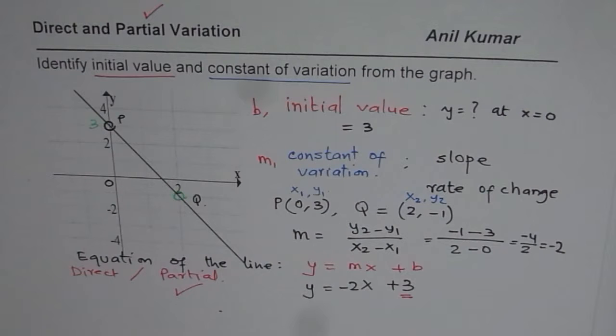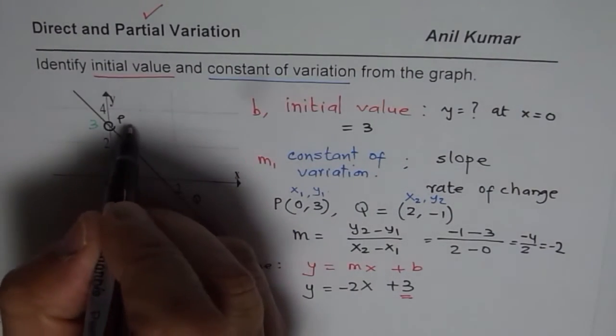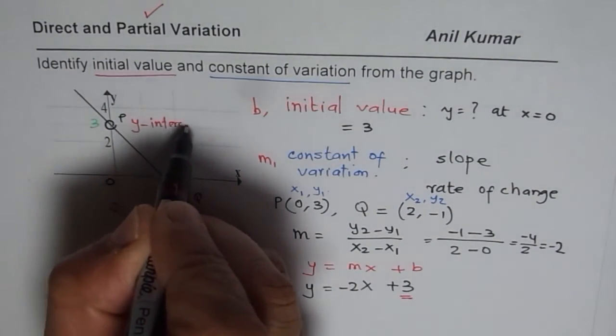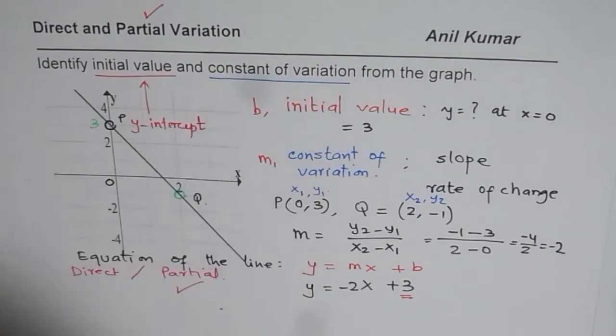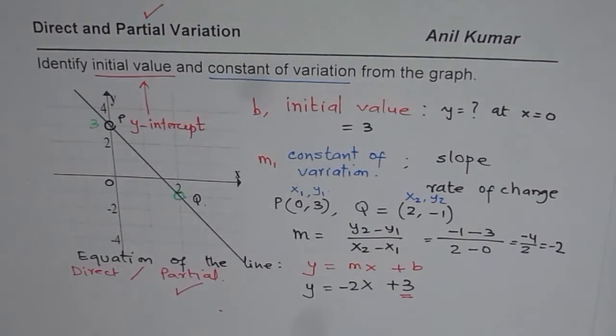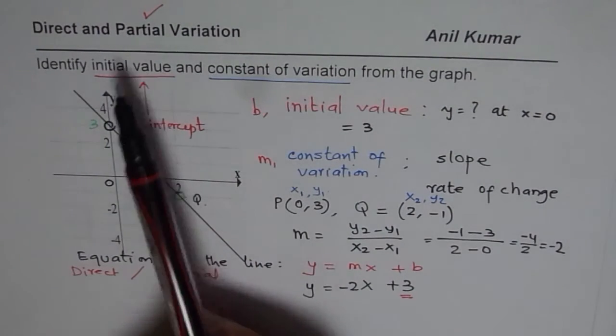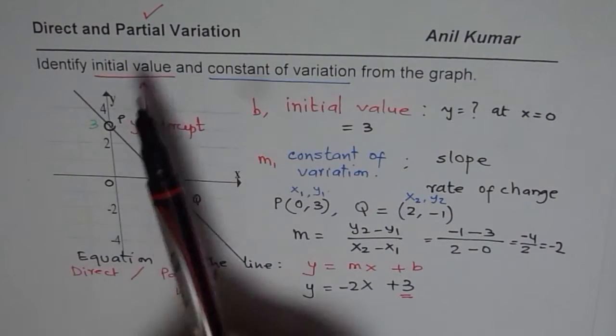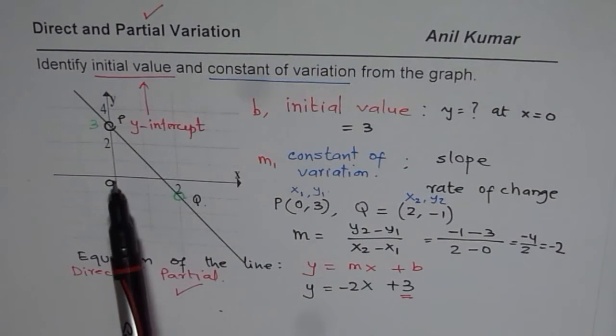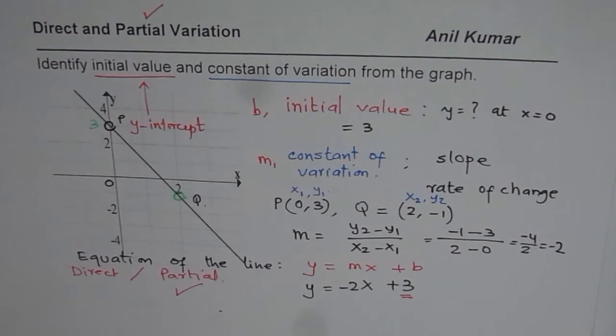I hope with this you understand what is the significance of y-intercept. The y-intercept is the initial value. If the initial value is not 0, then it is partial variation. If initial value is 0, then it is direct variation. These are ways of understanding direct and partial variation and the technical terms which help us write the equation representing the line. Thank you.